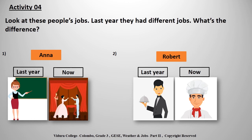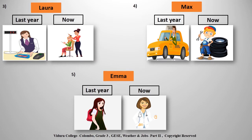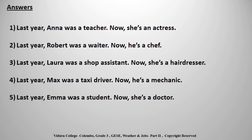Activity 4: Look at these people's jobs. Last year they had different jobs. Their names are: Anna, Robert, Laura, Max, and Emma. Let's check your answers. Last year Anna was a teacher, now she is an actress. Last year Robert was a waiter, now he is a chef. Last year Laura was a shop assistant, now she is a hairdresser. Last year Max was a taxi driver, now he is a mechanic. Last year Emma was a student, now she is a doctor. Did you get all correct? Well done!